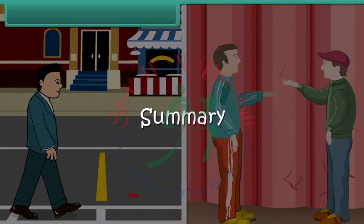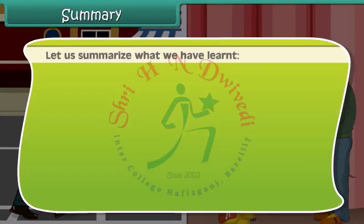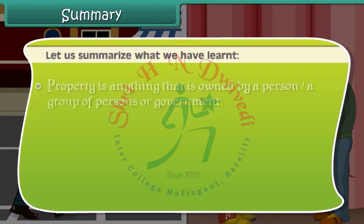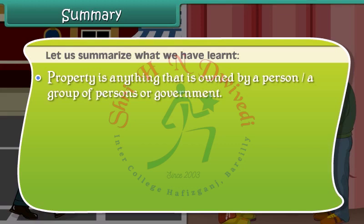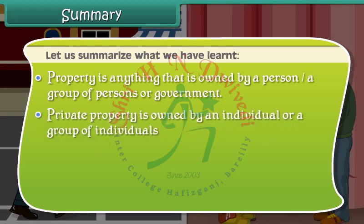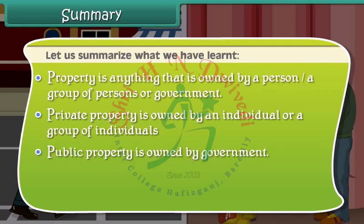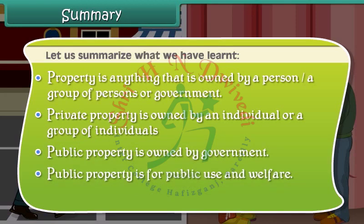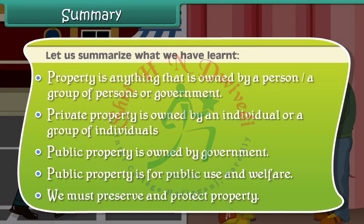Summary: Property is anything that is owned by a person, a group of persons, or the government. Private property is owned by an individual or a group of individuals. Public property is owned by the government and is for public use and welfare. We must preserve and protect property.